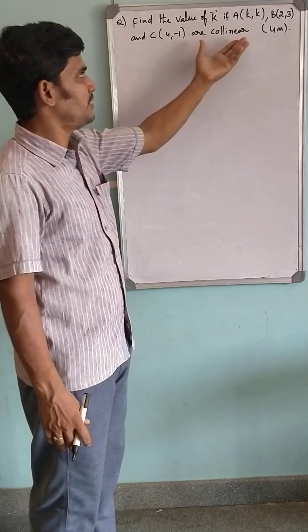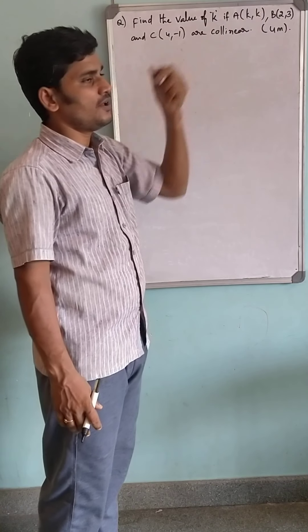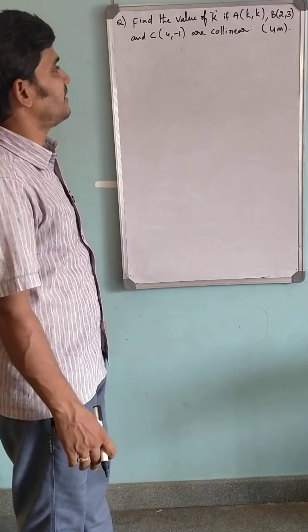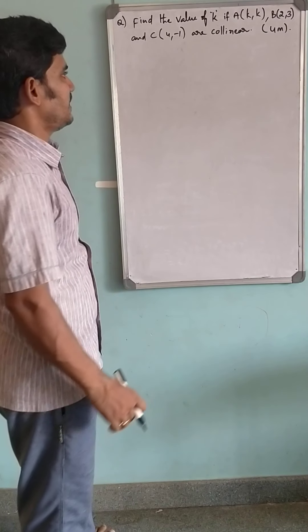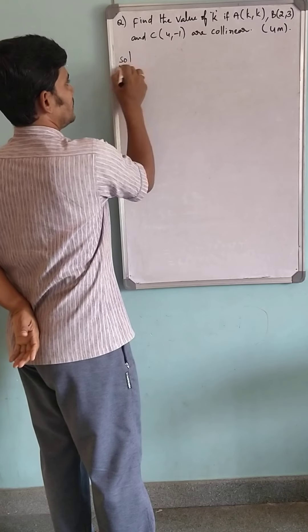You are given three collinear points. From this clue, you have to find the value of the missing coordinate K. Let me go for the solution.